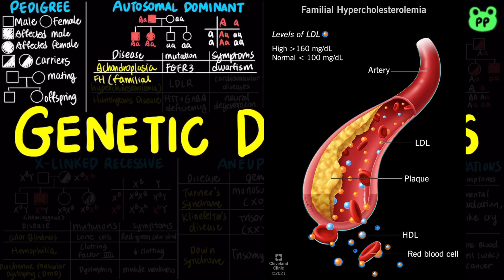Familial hypercholesterolemia, abbreviated as FH, is caused by an autosomal dominant mutation of the LDLR gene, which encodes the low-density lipoprotein receptor. LDL is responsible for the storage of excess fatty acids in peripheral tissue. An LDL defect results in high cholesterol in the blood, which can further lead to various cardiovascular diseases including stroke or heart attack.